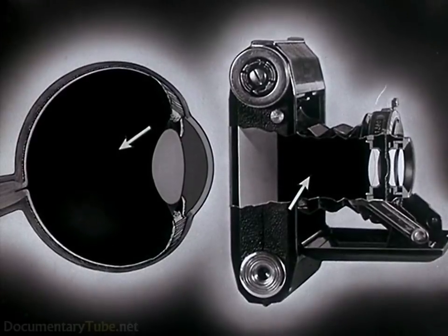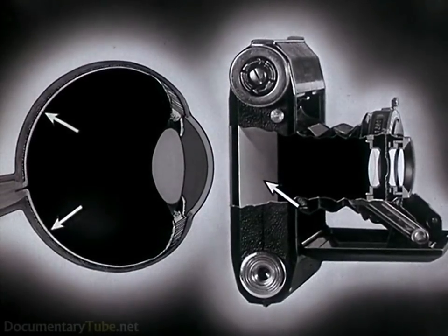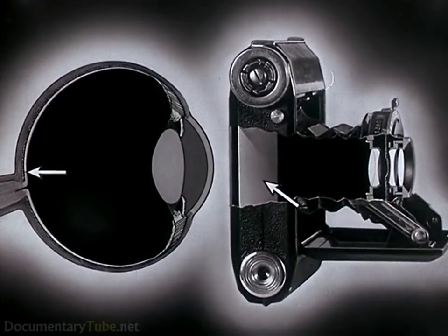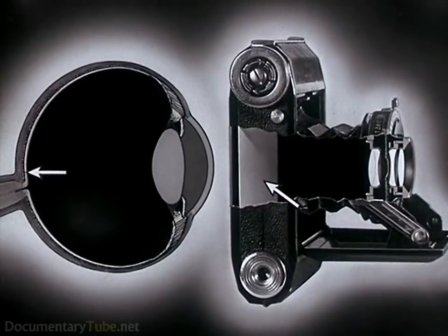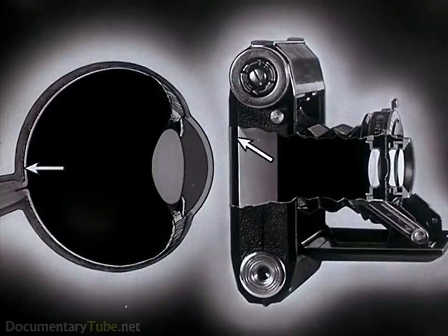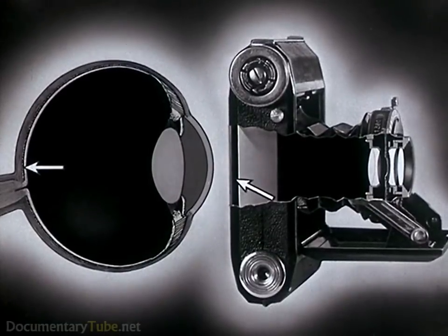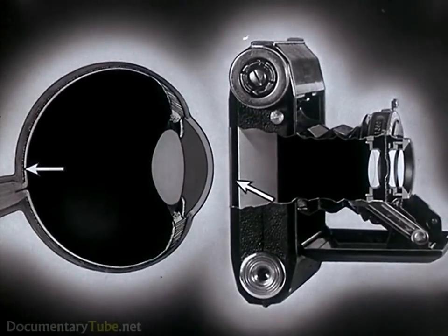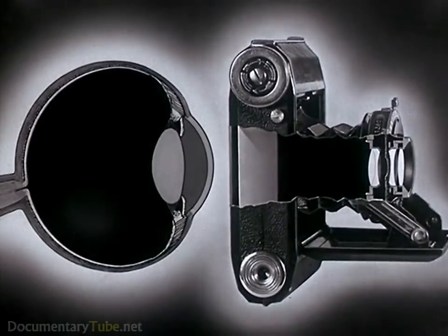The eye has a dark chamber and a sensitive layer called the retina, a counterpart of the film in the camera. And back of the retina is a layer of black tissue, which, like the black paint inside the camera, prevents reflections which would blur the image.